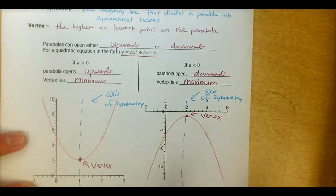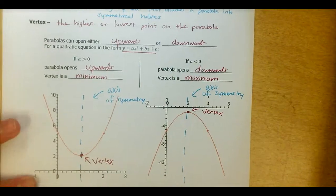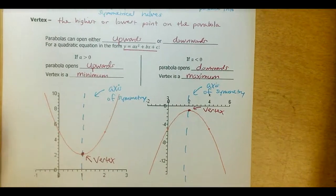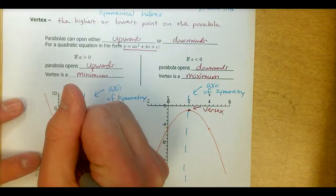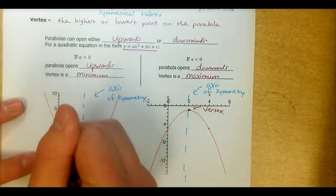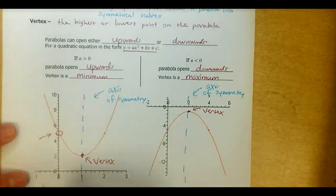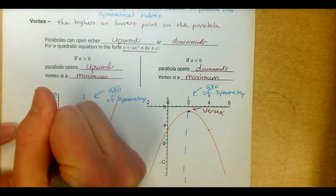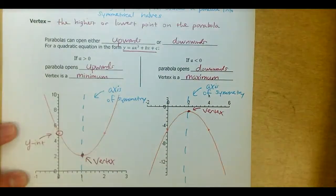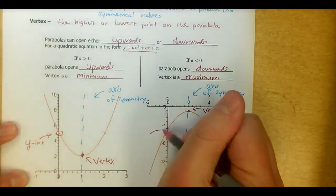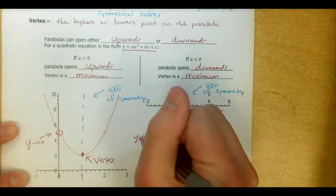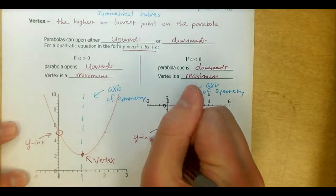I also want you to remember what the term y-intercept means — the y-intercept is where a graph crosses the y-axis. On this parabola, this point looks like about (0, 5), which would be the y-intercept. And on this other graph it would be this point right here, which looks like about (0, −5).